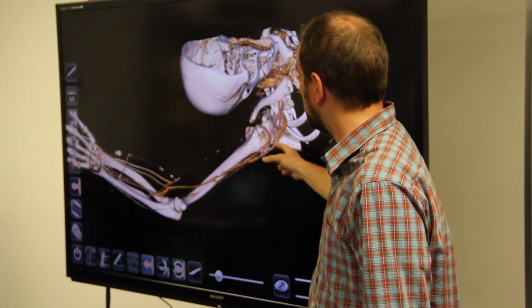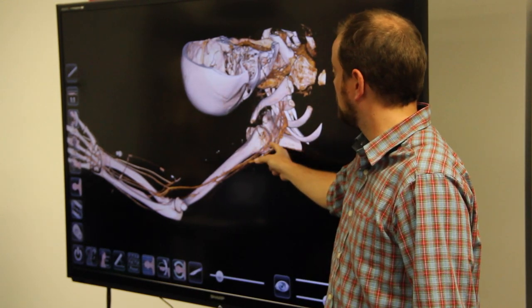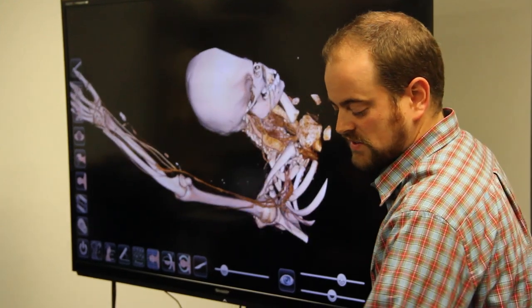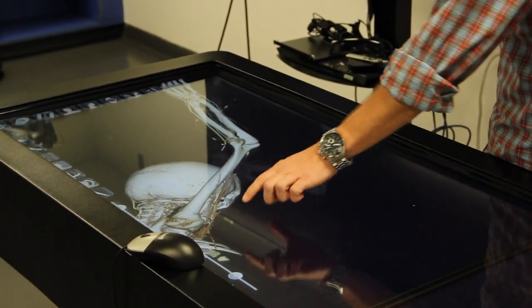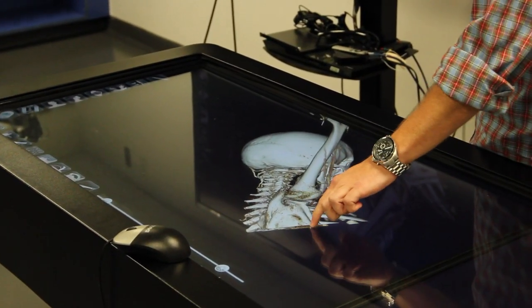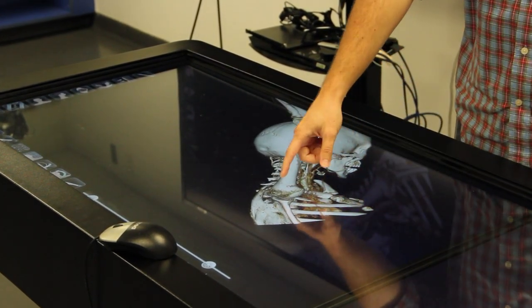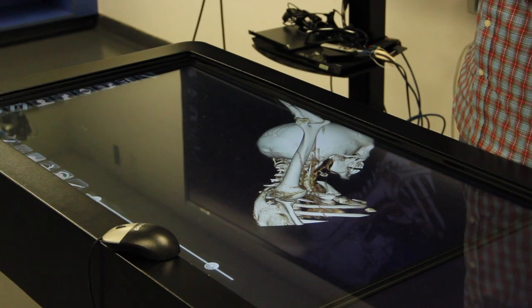So the coracoid process, this would be the glenoid fossa. Here's the head of the humerus. So we now can see that glenohumeral joint allows for a lot of motion. When the actual humerus starts to hit the acromion, that's what's going to limit that motion.